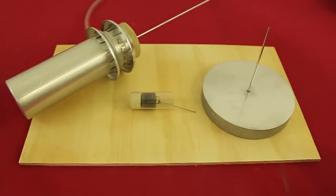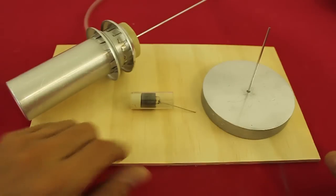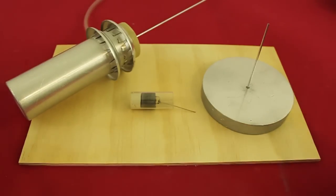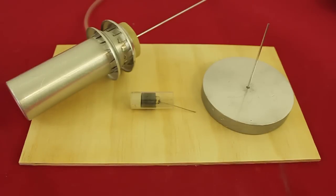We now have all the elements of the engine: the displacer piston, power piston and the flywheel. And now we have to assemble everything on a wooden base. This will be the subject of the next video.